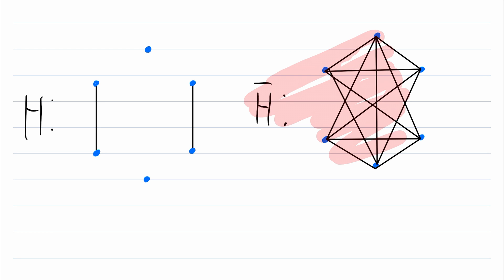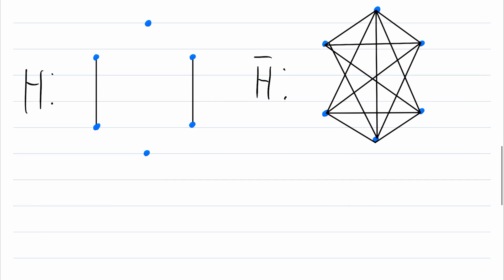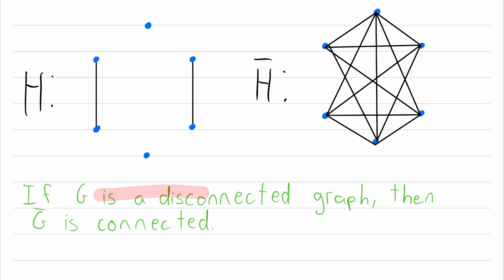What do you notice about H complement? Well, it turns out H complement is a connected graph. There exists a path connecting every pair of distinct vertices in this graph. This is an example of a general property. If G is a disconnected graph,